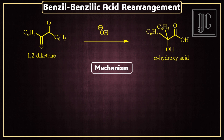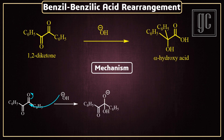We are now going to discuss the mechanism of the reaction. Under basic conditions, a hydroxyl ion attacks the carbonyl carbon of the ketone. As a result, the pi electrons of the carbonyl bond move to the oxygen atom and a negative charge is generated on oxygen. The negative charge on oxygen then drives one alkyl group to leave as a leaving group.